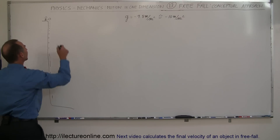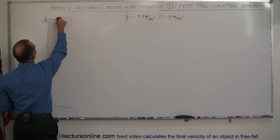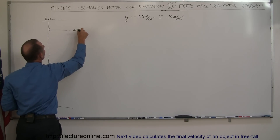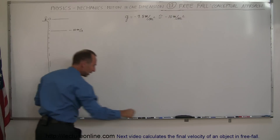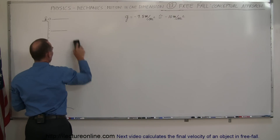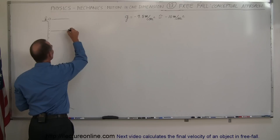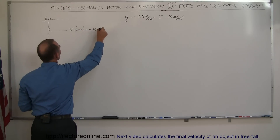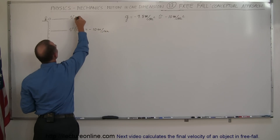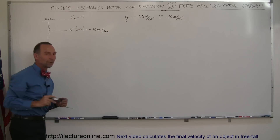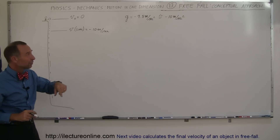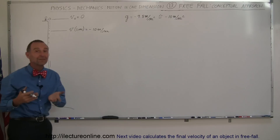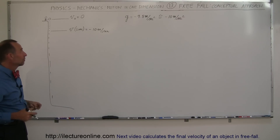What happens to the object? After one second, the object will now be moving at minus 10 meters per second. So velocity after one second equals minus 10 meters per second, and velocity initial equals zero. It went from zero to 10 meters per second in a negative direction. That's what acceleration due to gravity really means — every second it's moving 10 meters per second down faster than the second before.